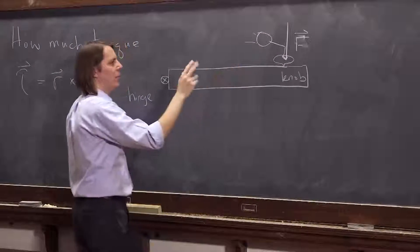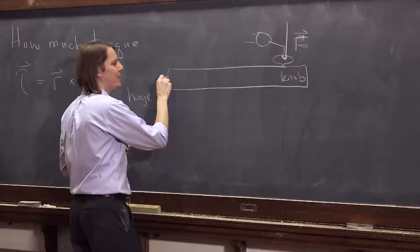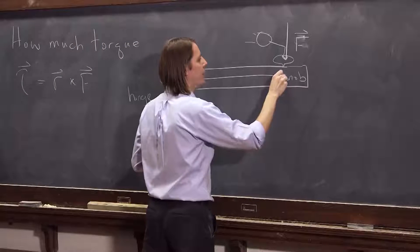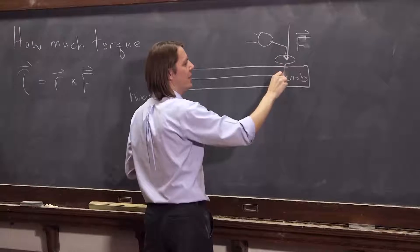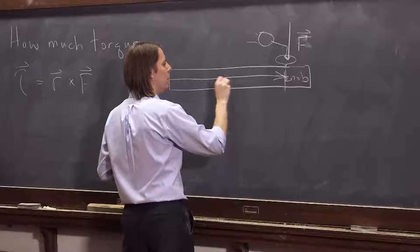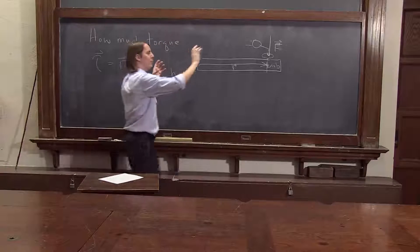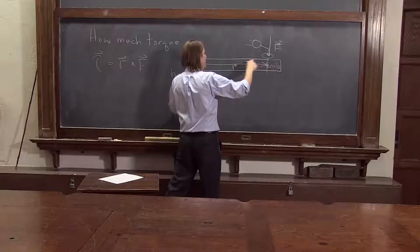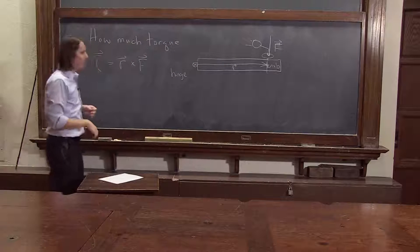So the other vector we need is R, and that is from the point, from the axis of rotation, out to the point where you apply the force. In this case the line, the place in the door where you apply the force. So that's R. So if you push from really far from the pivot point, then R is really big. If you push really close, R is really small.